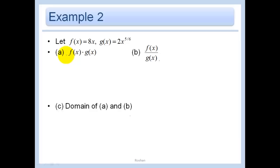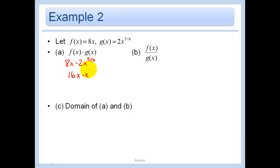Now we're multiplying: 8x times 2x to the 5/6. Let's do the number part first: 16x times x to the 5/6. Same base, add the exponents: 16x to the 11/6.